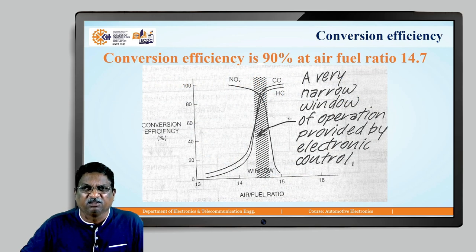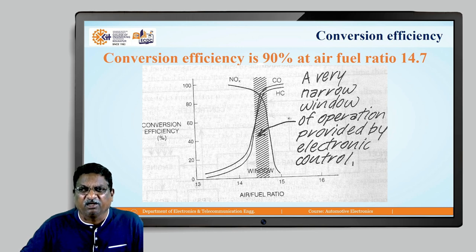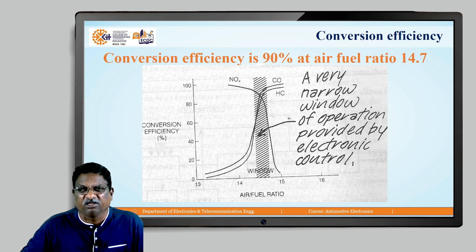If you observe this graph of conversion efficiency versus nitrogen efficiency versus air-fuel ratio, the operating window is very, very small. Near the 14.7 air-fuel ratio, the amount of NOx (nitrogen oxides), CO (carbon monoxide), and HC (hydrocarbons) is minimized, and therefore the air-fuel ratio chosen is 14.7. This very narrow window of operation is provided by the electronic control.